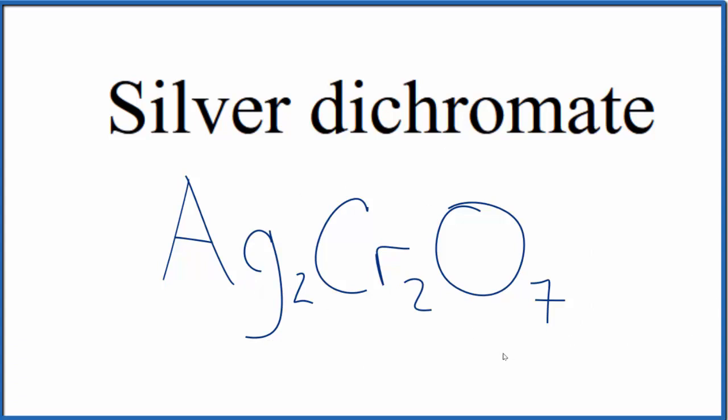If you were given the formula and asked to write the name, sometimes you'll see people write this as silver(I) dichromate, since it's a transition metal using the Roman numeral I. But since silver is almost always 1+, it's really not necessary to do that.